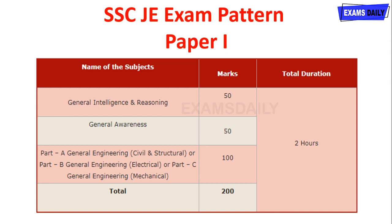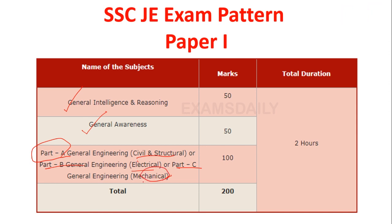This exam pattern comprises Paper 1 and Paper 2. For both papers, you must give deep importance to your stream subject — that is important for this Junior Engineer examination. Paper 1 consists of General Intelligence and Reasoning, General Awareness, and then three parts: Part A for Civil and Structural Engineering, Part B for Electrical, and Part C for Mechanical Engineering. If you are a diploma holder, questions are based on your diploma subjects; if you are an engineering graduate, questions are based on your engineering stream.